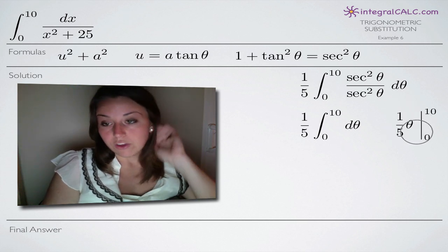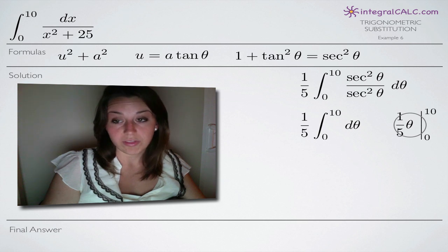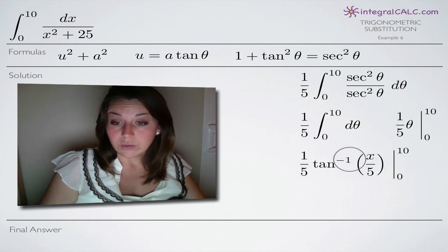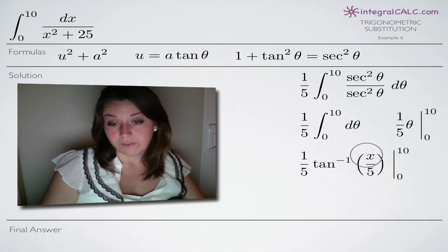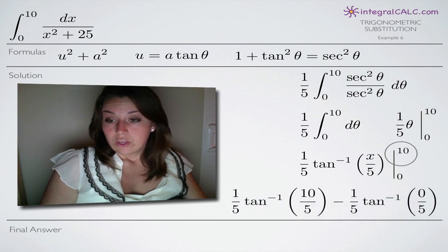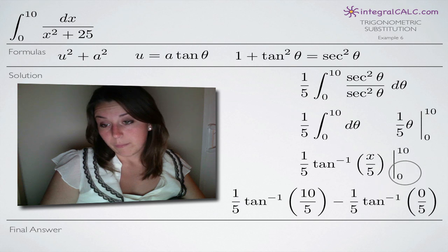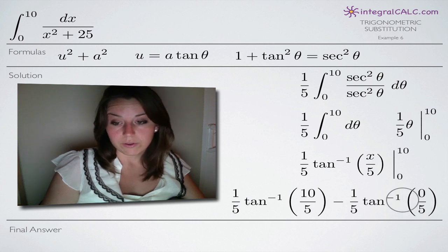The one fifth stays, and now we evaluate on the range 0 to 10. Before we can evaluate, we plug back in for theta. We found earlier that theta equals tangent to the negative 1 of x over 5, so we substitute that in. Evaluating on the limits, we plug in 10 first and subtract the result at 0. Tangent to the negative 1 of 0 over 5 equals tangent inverse of 0, which is 0, so the second term goes away entirely.